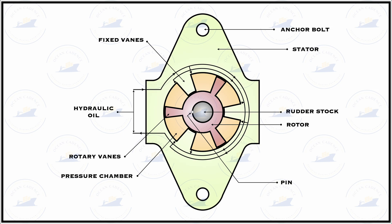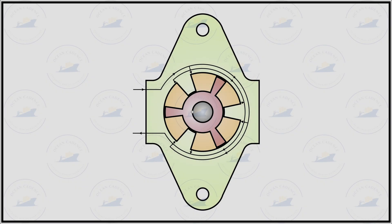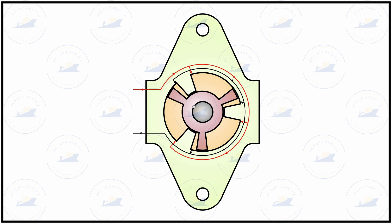Looking at the top view diagram, when oil flows in it traces a pipeline passage and enters the block, goes into the restricted passage, and enters the annular space chamber. Because of the restriction of the passage, the part that is free to move — the rotary vanes — has pressure created on its face, causing the rotary vanes to turn. The other annular space from the previous motion would also have oil, so that oil gets squeezed out and traces the return path.